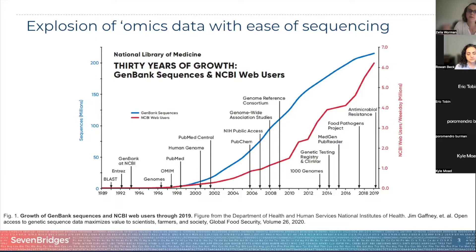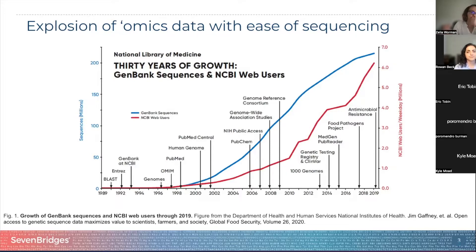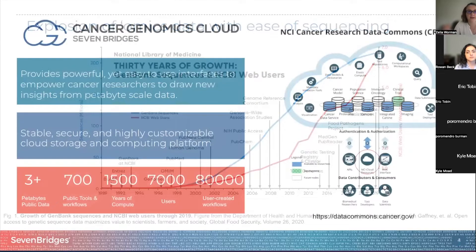As a researcher or a student on their way to become one, it is important to think about the multiple dimensions of these biological properties when trying to answer your question. One way that you access these datasets is through a cloud platform like the CGC.